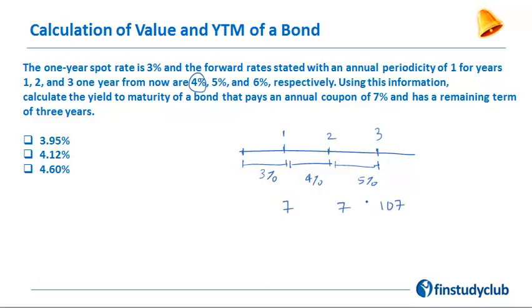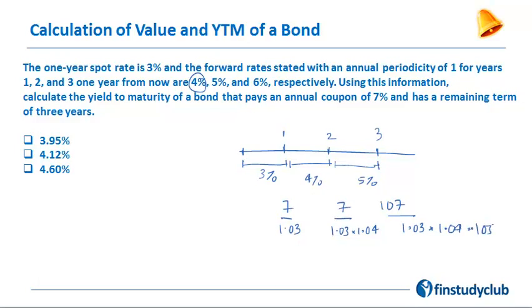My cash flows with respect to a 7% 3-year bond would be $7, $7, and $107, assuming a $100 face value bond. I need to arrive at the present value of these cash flows and add them up to arrive at the value of the bond. The first $7 gets discounted by 3%.